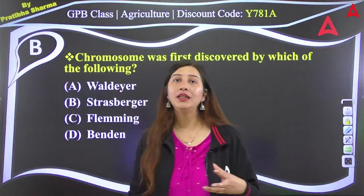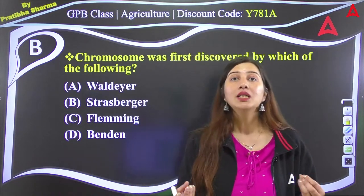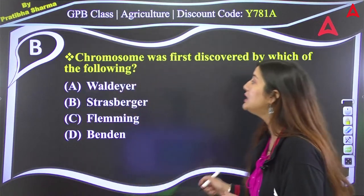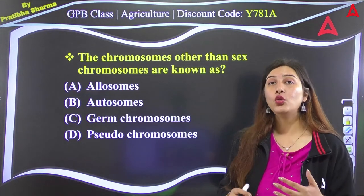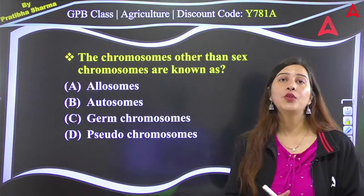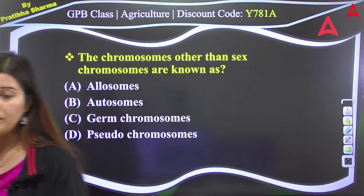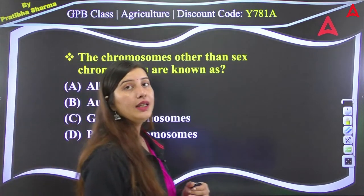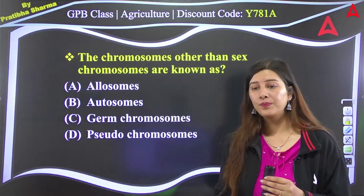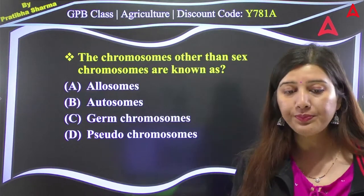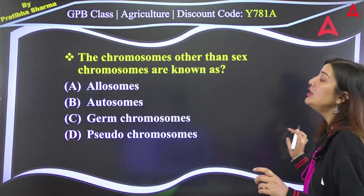Chromosomes are also of two types based on location: somatic chromosomes and sex chromosomes. Sex chromosomes are X and Y. The next question asks: chromosomes other than sex chromosomes are known as — A: allosomes, B: autosomes, C: germ chromosomes, D: pseudo chromosomes. The right answer is option B: autosomes. Lily answered correctly first.